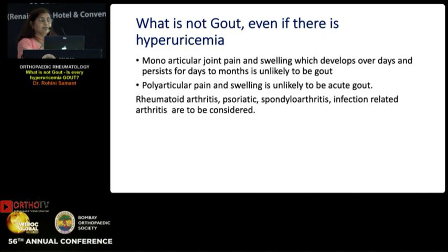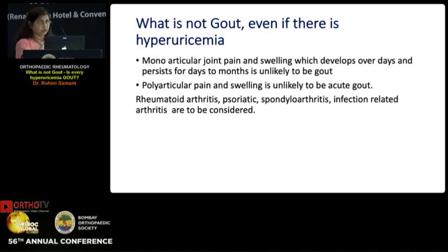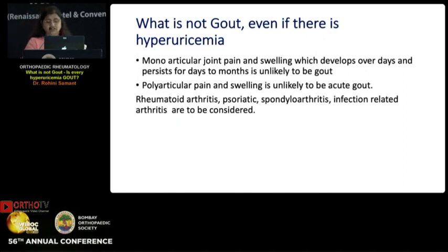Even if there is hyperuricemia on the report, if the patient has polyarticular pain and swelling, it is unlikely to be acute gout. These are the differentials one needs to consider in this setting. It's preferable we don't ask for a uric acid, but since panels give us the report, we should consider the possibility of rheumatoid arthritis, spondyloarthropathic arthritis, or infection-related arthritis.